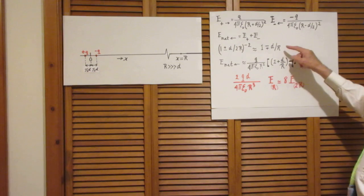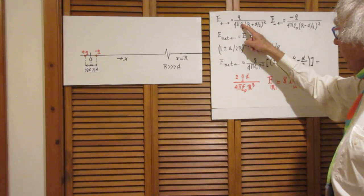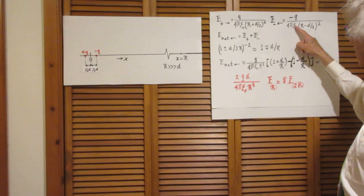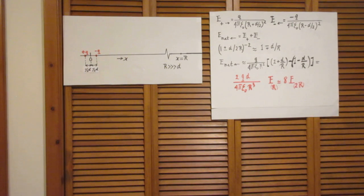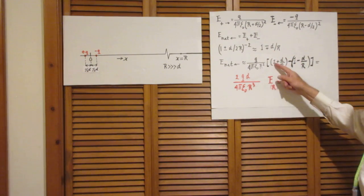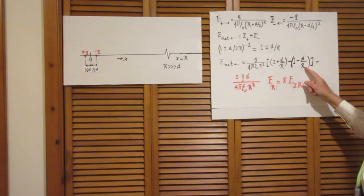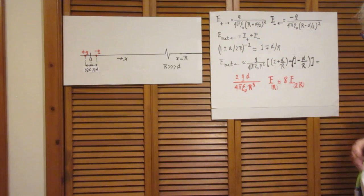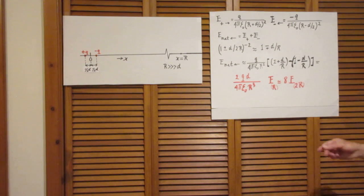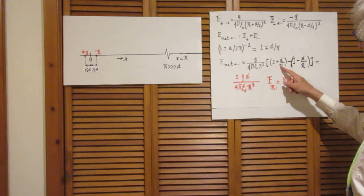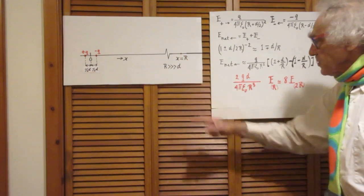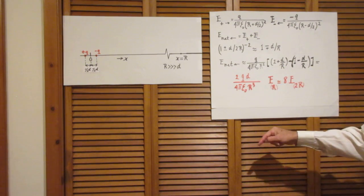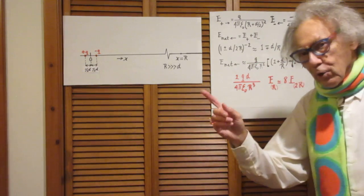So I'm going to replace now this term by an R squared outside, also here by an R squared outside. And the inside then becomes this. So you see here the net results. You see this R squared here, which I've taken out. And you see, as I promised, here you see 1 plus D over R minus 1 minus D over R. And the algebra of this is trivial. The plus 1 eats up the minus 1. And the plus D over R with minus D over R becomes 2D over R. And so the net field at that location capital R becomes 2QD divided by 4 pi epsilon 0 R to the third.